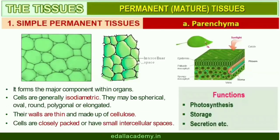Parenchyma forms the major component within organs. The cells of parenchyma are generally isodiametric. They may be spherical, oval, round, polygonal, or elongated in shape. Their walls are thin and made up of cellulose. They may be closely packed or have small intercellular spaces. Parenchyma performs various functions like photosynthesis, storage, and secretion.